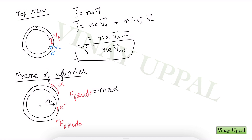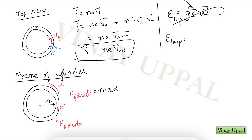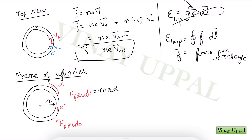Now let's address the crucial concept of EMF. Many students have the misconception that EMF is simply the integral of E·dL, i.e., the integral of the electric field around a closed loop. This is not entirely correct — it is actually a special case where only the electric field is present. EMF in a loop is given by the integral of F·dL, where F is the net force acting per unit charge. The electron does not care whether the force comes from an electric field, a magnetic field, or any other source — in this case, it comes from the pseudo force.